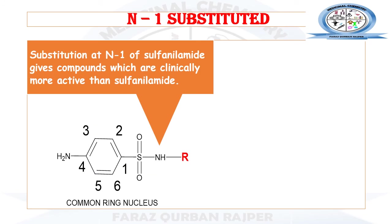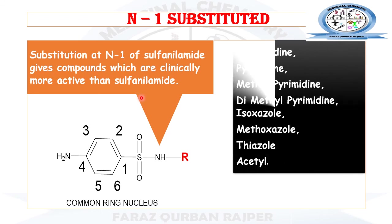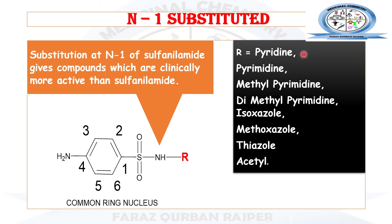This is the common ring nucleus for sulfonamide. Substituting the N1 position will give clinically useful sulfonamide drugs with good potency compared to sulfanilamide itself. The N1 position can be substituted with pyridine, pyrimidine, methylpyrimidine, dimethylpyrimidine, isoxazole, methoxazole, thiazole, or acetyl groups — these are the different functional groups forming various derivatives.